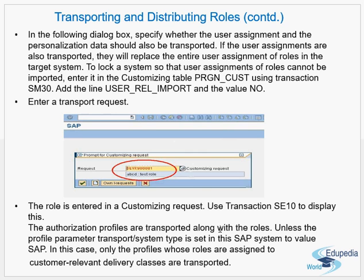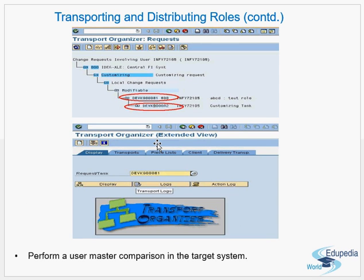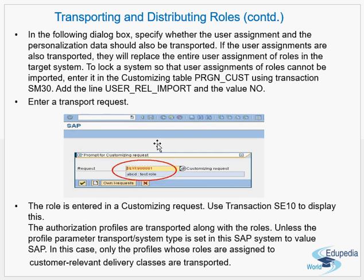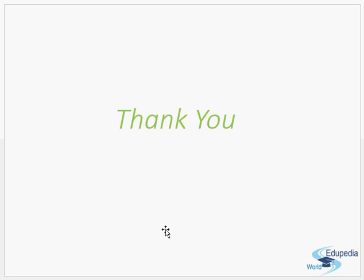You give a request name — it's a customizing request — and release it from the source system so it can be transported from development to QA and then to production. Generally, profiles are also transported along with the roles. Roles are developed in the development box and transported across the landscape: development to QA, QA to production. Thank you.